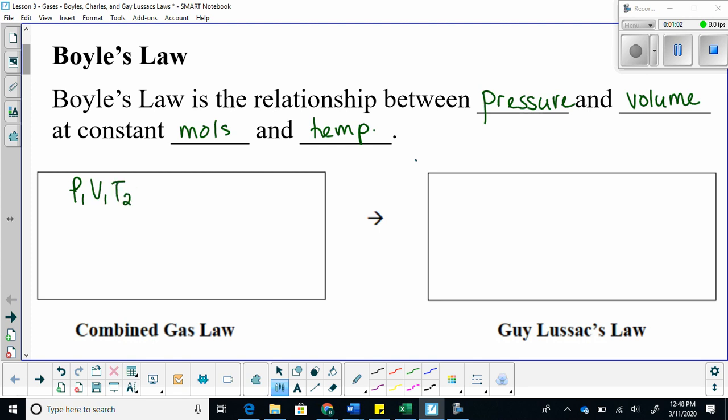P1 V1 over T2 is equal to P2 V2 over T1. Out of these three variables, which one is now constant? T. So we can say, because T is constant, T1 is equal to T2. So this is what it looks like now: P1 V1 over T1, because T1 is equal to T2, is equal to P2 V2 over T1.